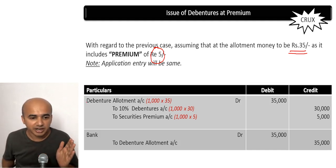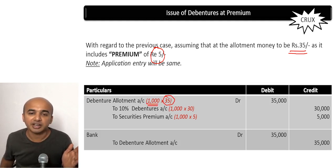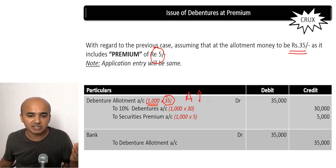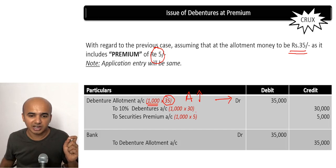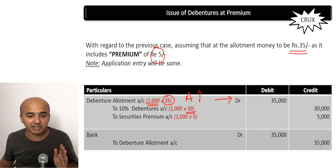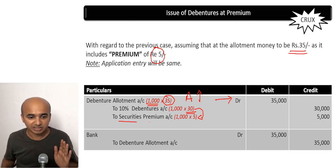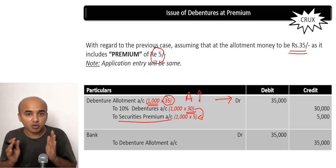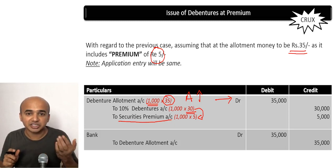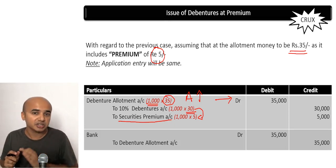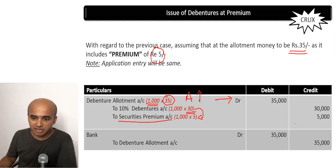Debenture allotment account has been debited for 1,000 debentures at rupees 35 because it now includes a premium of rupees 5, so this is an asset which is increasing and must be debited — 35,000. Credit 10% debentures account: the liability is increasing with respect to debentures only by rupees 30, as the remaining rupees 5 will be treated as premium on issue of debentures. It is a separate liability getting increased, so now we have two liabilities instead of one — debentures and securities premium account.